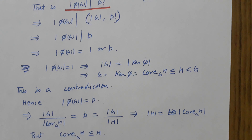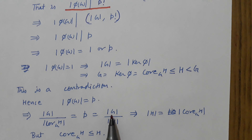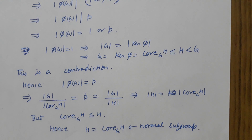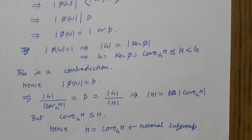Hence |φ(G)| = p. This means |G|/|core(H in G)| = p = |G|/|H|, so |H| = |core(H in G)|. Since core(H in G) is a subgroup of H and they have equal order, H = core(H in G). But core(H in G) is a normal subgroup of G, therefore H is a normal subgroup of G. Thank you.